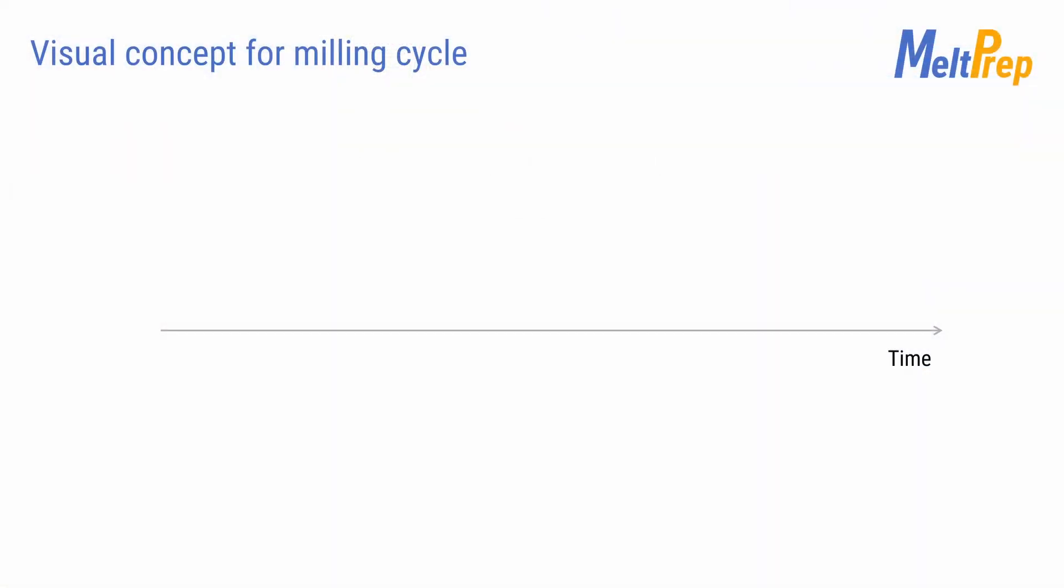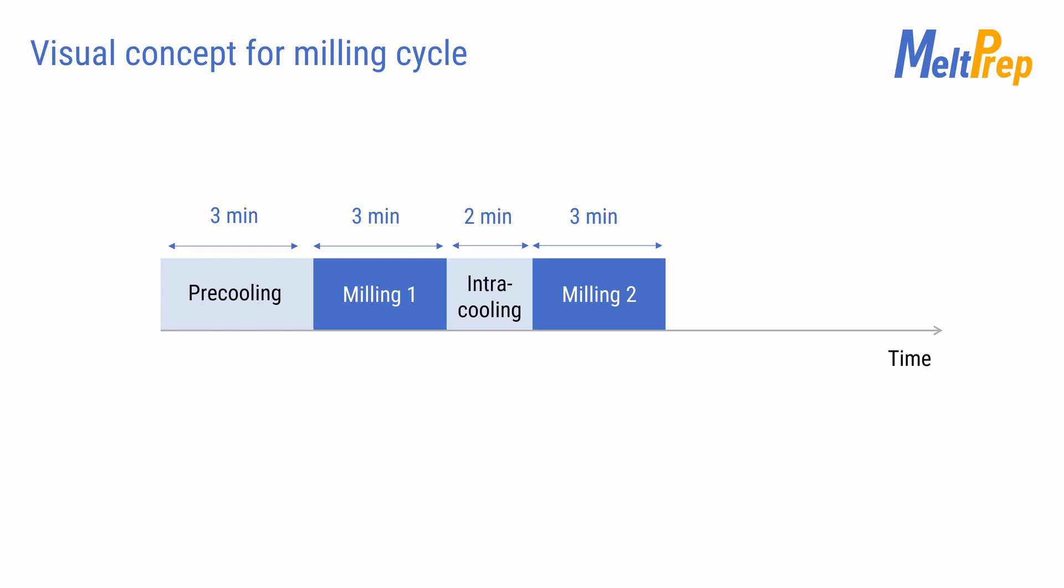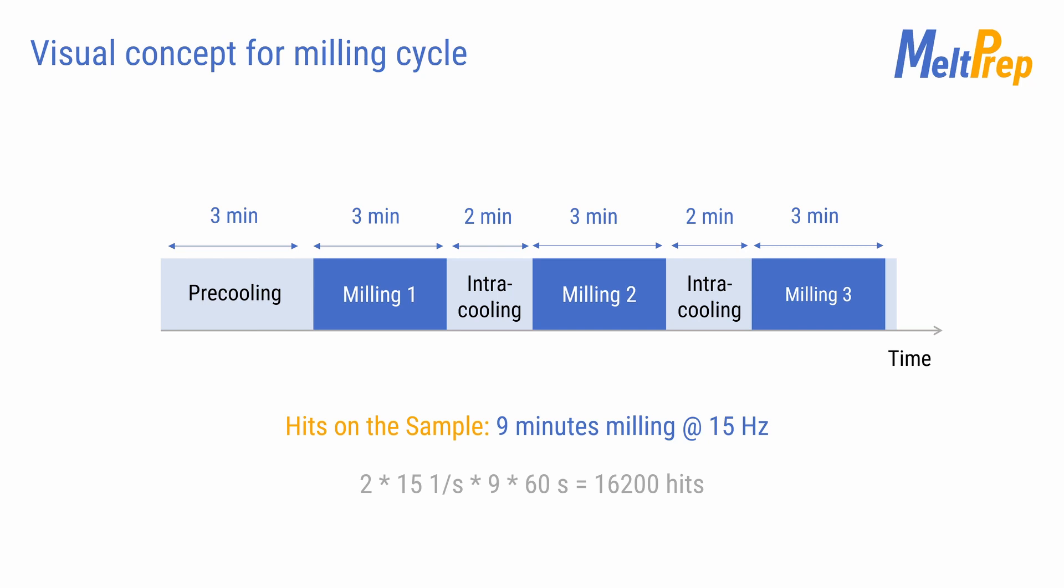We recommend a program with a pre-cooling time of 3 minutes to ensure that the material is thoroughly chilled before the milling begins. This is followed by 3 milling cycles of 3 minutes with intercooling times of 2 minutes. The intercooling step removes the heat of the high-energy input during the milling and prevents undesired softening. Milling programs like this generate over 16,000 potential hits on the loaded material ensuring perfect mixing.